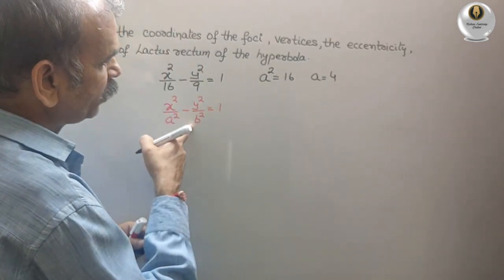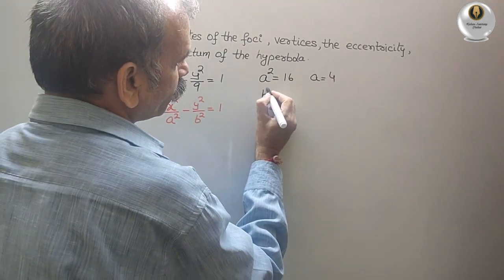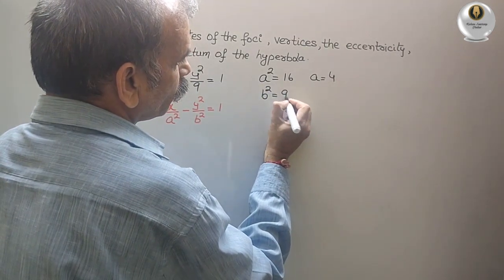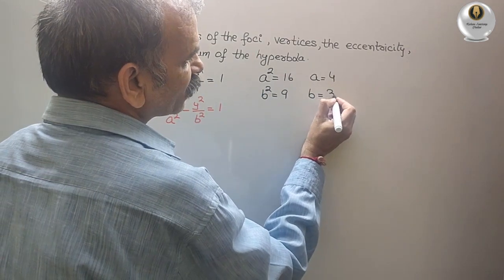Next, B square is 9. So B is equal to, we can say, it's 3.